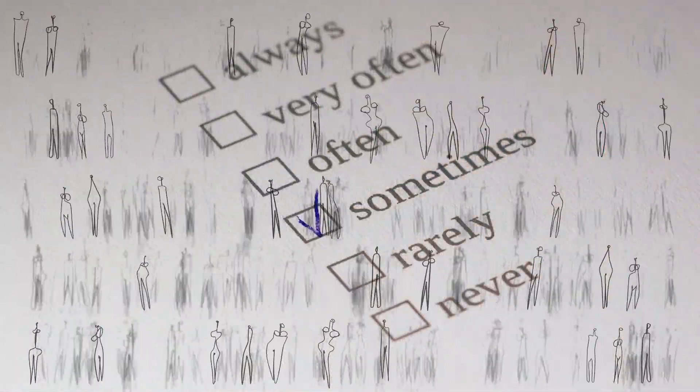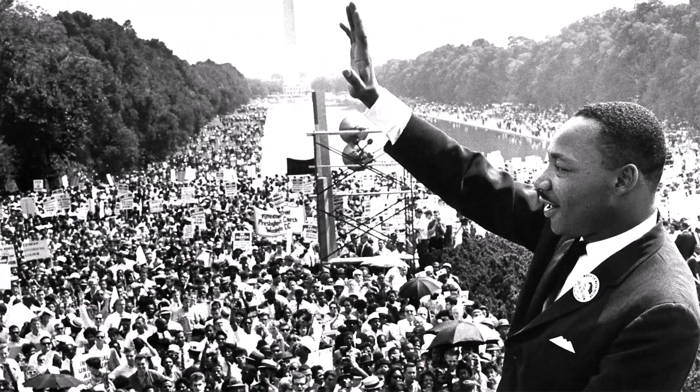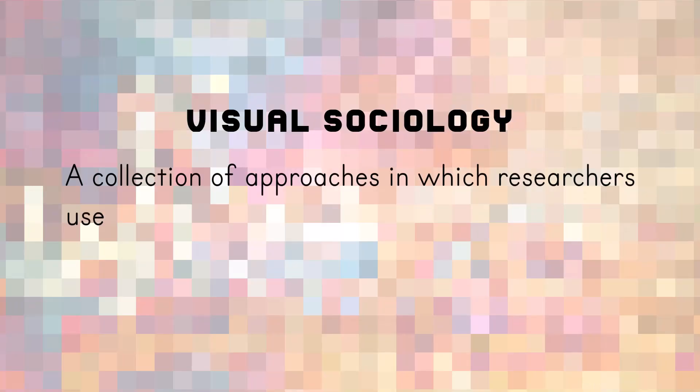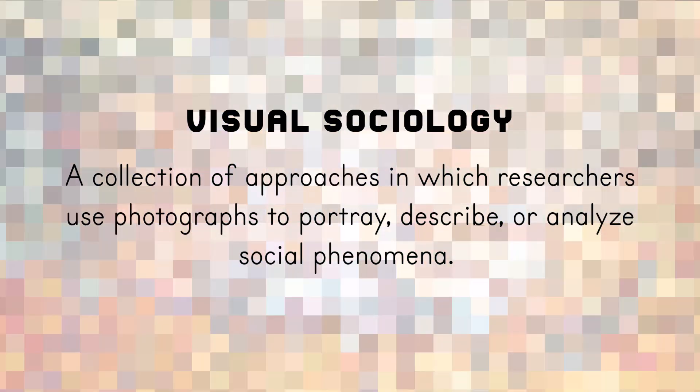The field of sociology spent much of the 20th century conducting large-scale quantitative surveys. This changed when in the 1960s sociologists became engaged in issues of war, race, class, and gender. Many associated research programs included photography. Visual sociology came to be defined as a collection of approaches in which researchers use photographs to portray, describe, or analyze social phenomena.